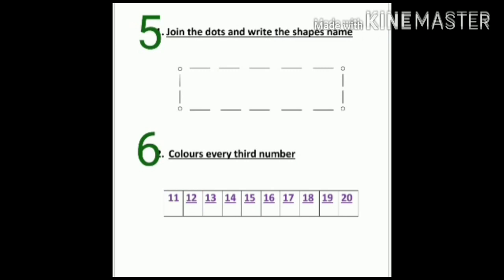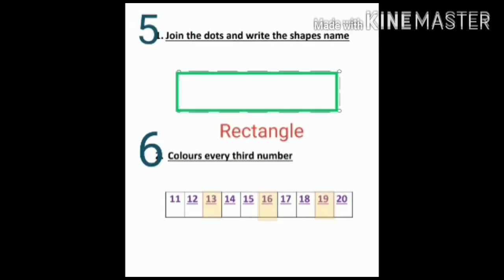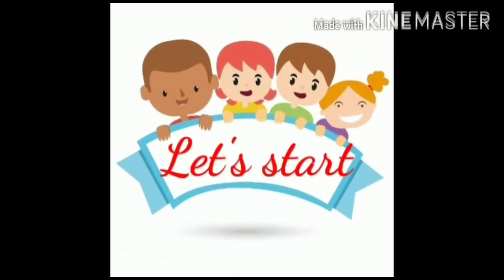Next, question number 5 is join the dots and write the shape name. So if we join the dots, which shape you will get? You will get rectangle. And question number 6 is color every third number. Okay? Let's start today's class.